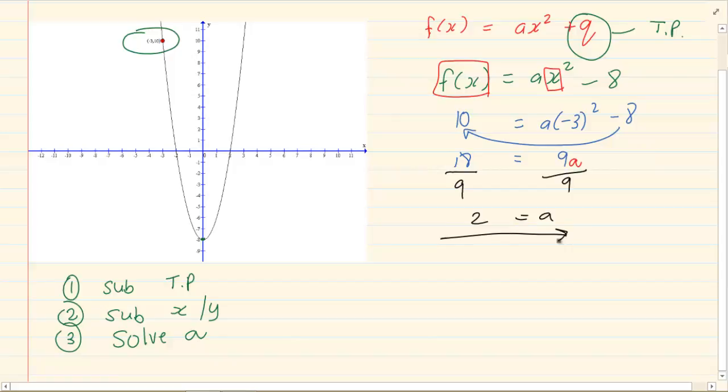But when they say get the equation of the graph, you have to rewrite it. So we have got f of x is equal to 2x squared and then our q was minus 8.